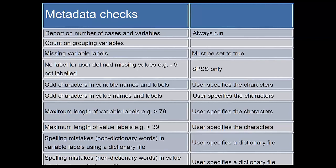The second thing we look for is metadata. We're checking for missing variable labels — we may not want any labels that are unspecified. We're looking for missing values that have no label, odd characters in names and labels, and the length of variable and value labels, where you can specify a maximum and it'll flag ones that don't obey that. We're also looking at spelling mistakes in variable labels and value labels using a dictionary file that's plugged in — we put an English dictionary file in, but you could put a dictionary file from another language in.